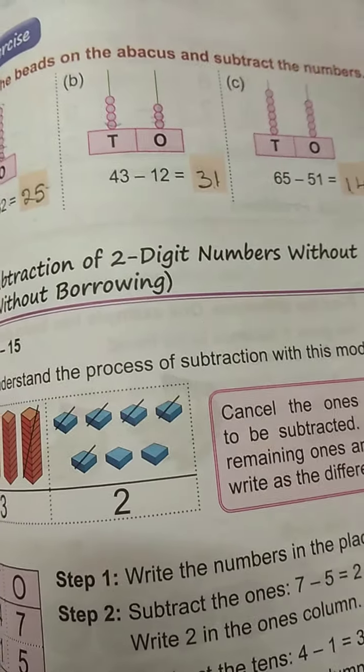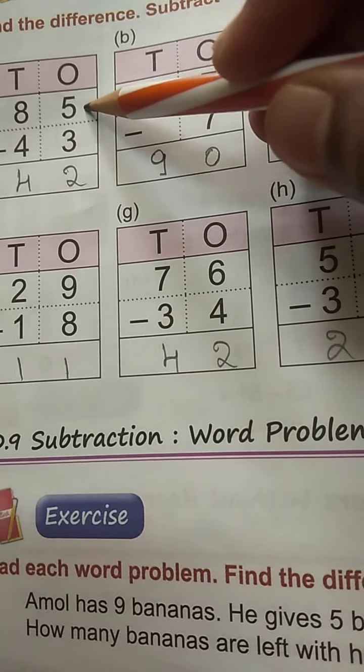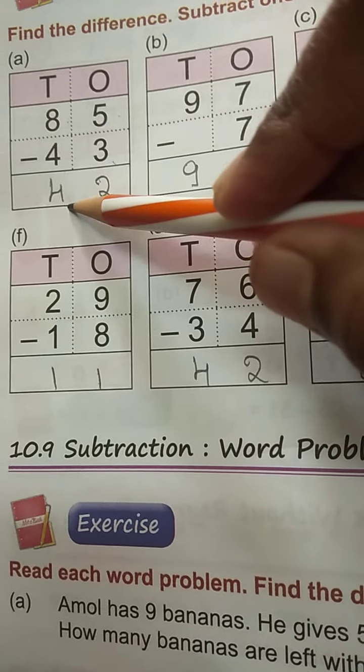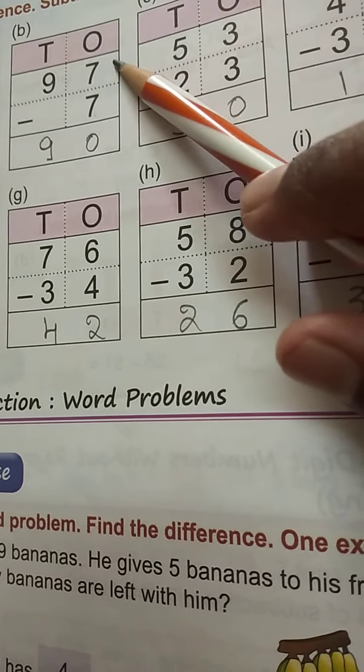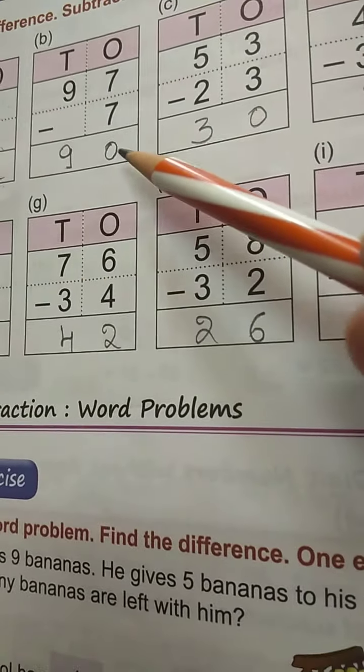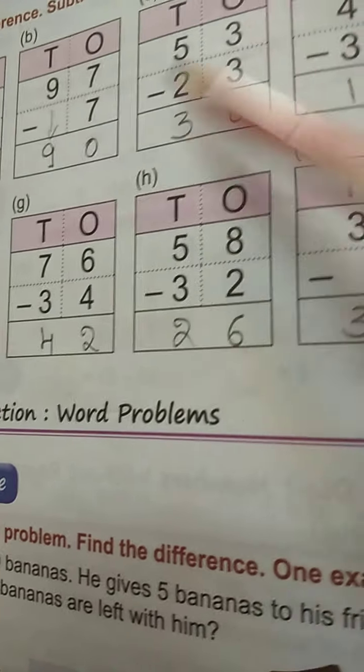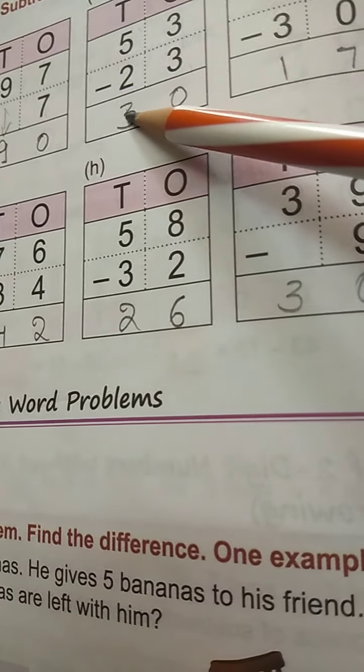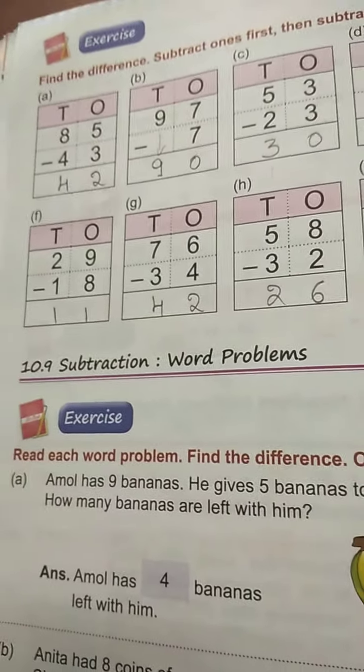Next, now subtraction of 2 digit numbers without borrowing. So first example. First exercise. First question. 5 minus 3, how much is left? 2 is left. So 8 minus 4, how much is left? 4 is left. You should do it one by one, tens and ones separately. So 7. 7 minus 7, how much is left? Chapter. Do the rest.